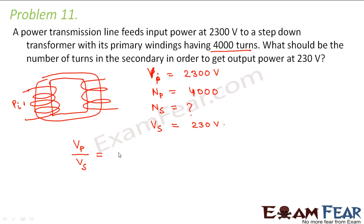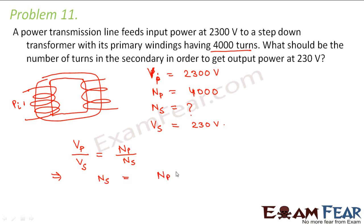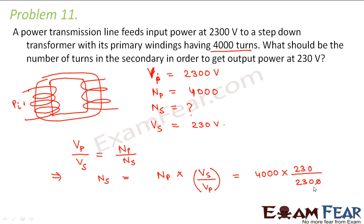We know that voltage across primary divided by voltage across secondary equals number of turns in primary divided by number of turns in secondary. Therefore, number of turns in the secondary coil equals Np times Vs divided by Vp, which is 4000 times 230 divided by 2300. This comes out to be 400 turns — the secondary coil should have 400 turns.